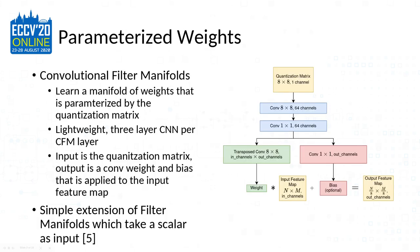For weight parameterization, we use a method we call convolutional filter manifolds. Instead of learning a single weight, we learn a manifold of weights parameterized by the quantization matrix. Think of it as a lightweight, three-layer CNN on each CFM layer. The input to the CNN is the quantization matrix, and the output is a weight and bias, which are then convolved with the input feature map for that layer — coming from the DCT coefficients. This is a straightforward extension of a filter manifolds technique, though the original technique takes a scalar and uses a fully connected network.